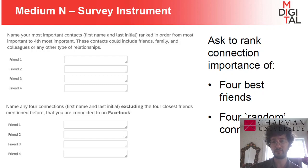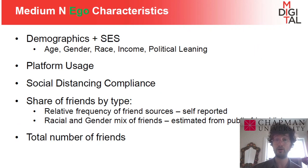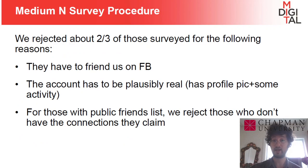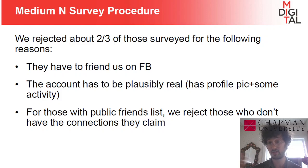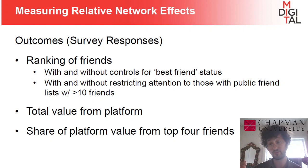We ask them to list eight friends: four best friends and four random friends. We ask a whole bunch of different alter characteristics — characteristics of those friends — and a whole bunch of ego characteristics, characteristics of the survey taker. As we collect these surveys, we work really hard to make sure that these are real people with real opinions, so we throw out about two thirds of the surveys we initially get. I'm going to show you some responses in ego and alter characteristics and where they predict friend rank, as well as overall value of the platform, which is something we also solicit in this medium N survey.